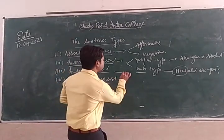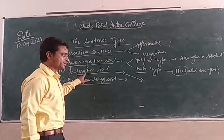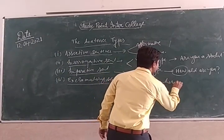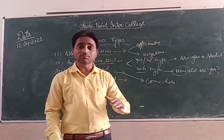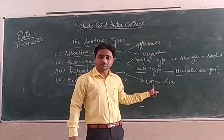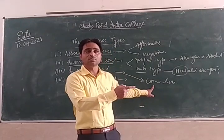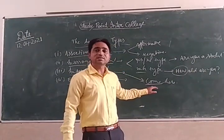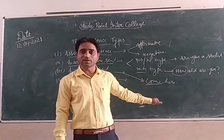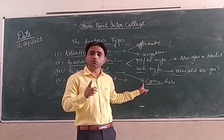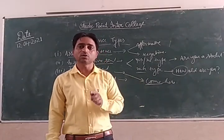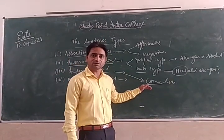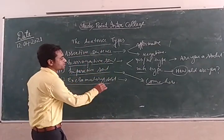For example, someone is saying to you: Come here. That is an order. Come here, shut the door, open the window — such sentences start from the verb. The subject of an imperative sentence is 'you,' which is understood.